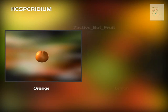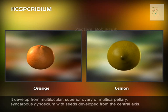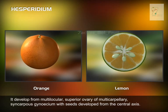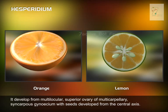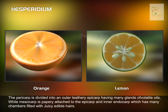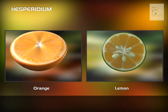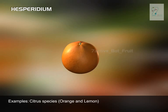Hesperidium: It develops from a multilocular superior ovary of multicarpellary syncarpous gynoecium with seeds developed from the central axis. The pericarp is divided into an outer leathery epicarp having many glands of volatile oils, while the mesocarp is papery attached to the epicarp, and the inner endocarp has many chambers filled with juicy edible hairs. It is the characteristic fleshy fruit of the family Rutaceae. Examples: Citrus species, orange and lemon.